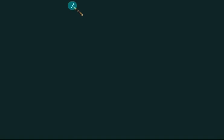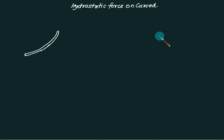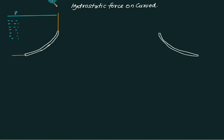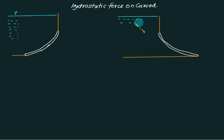Hydrostatic force on curved surface. Let us say we have one curved surface like this, and this one is the boundary wall and this one is the free surface level. It is holding water on this side, and this one is any irregular shape. We also have a vertical wall like this with water on this side. These are two different situations.